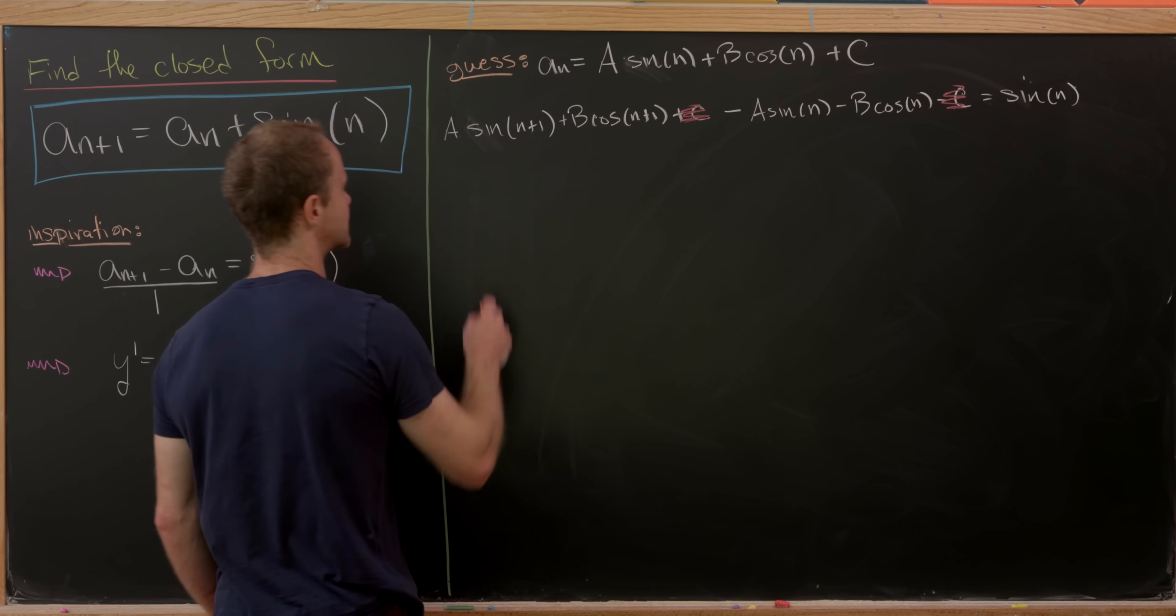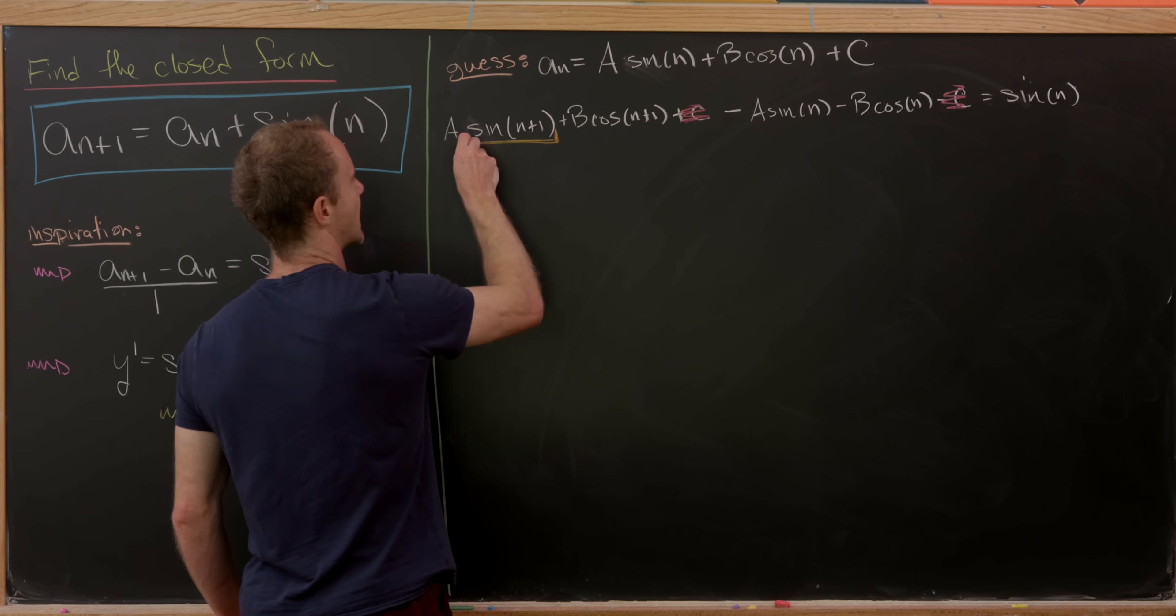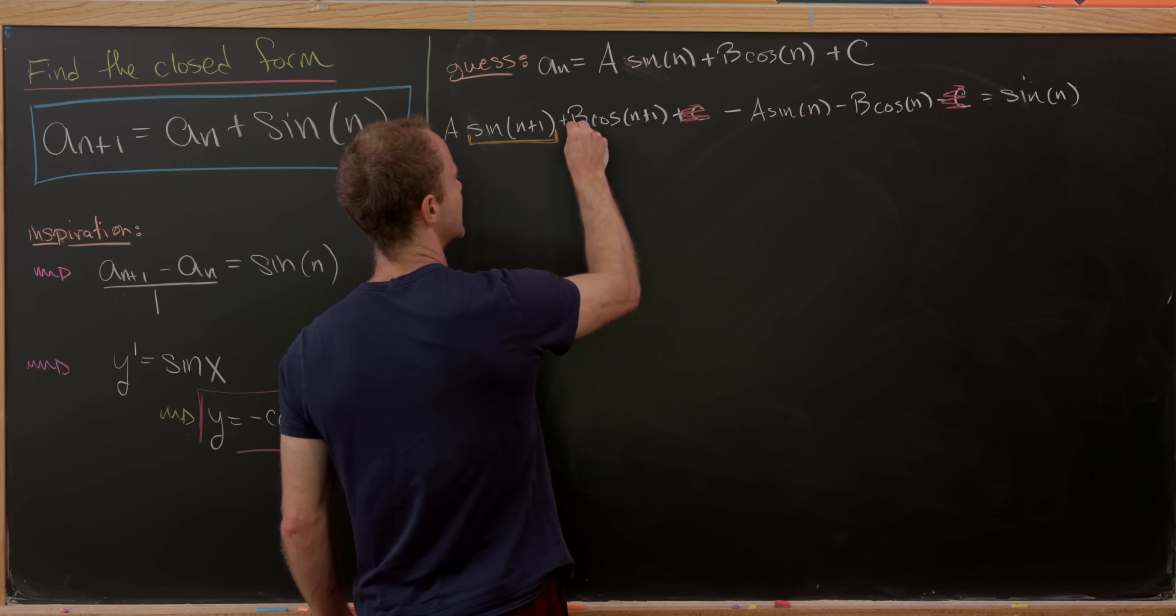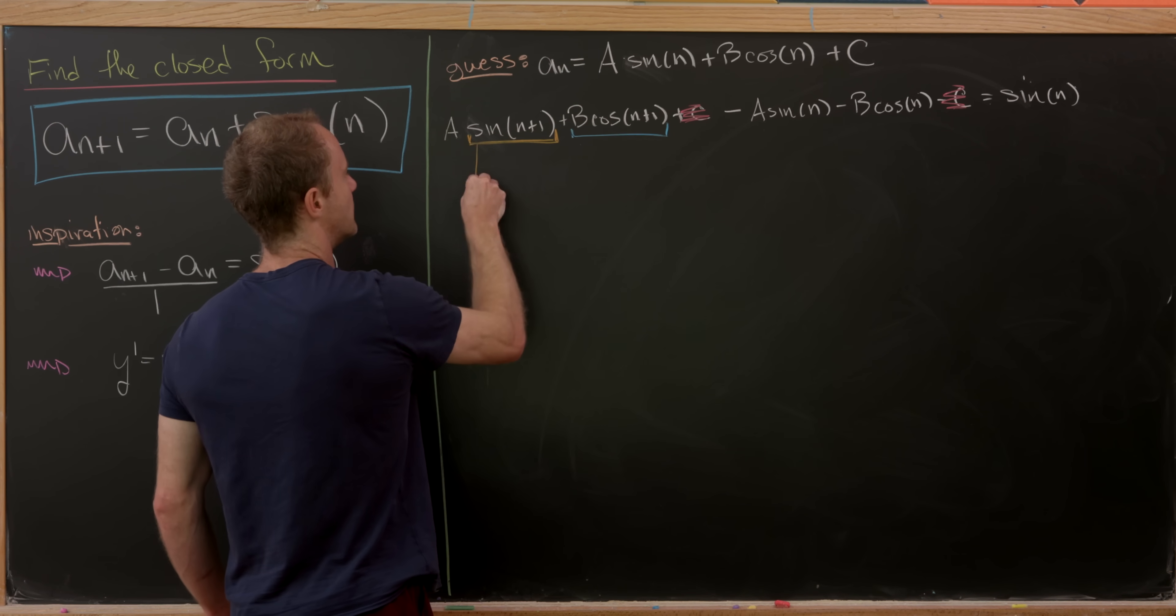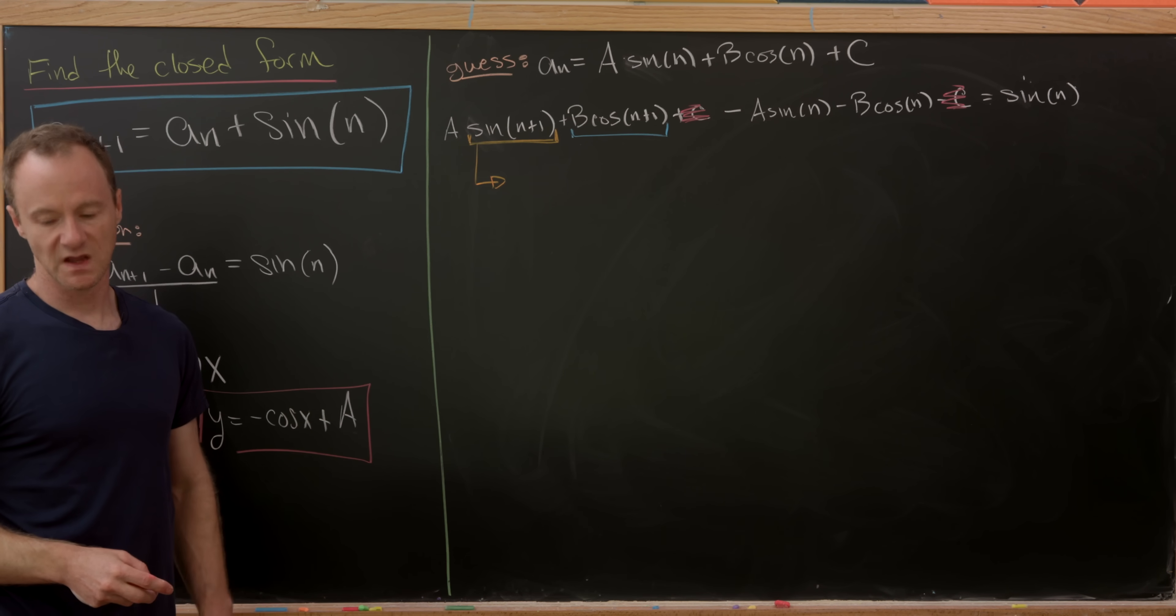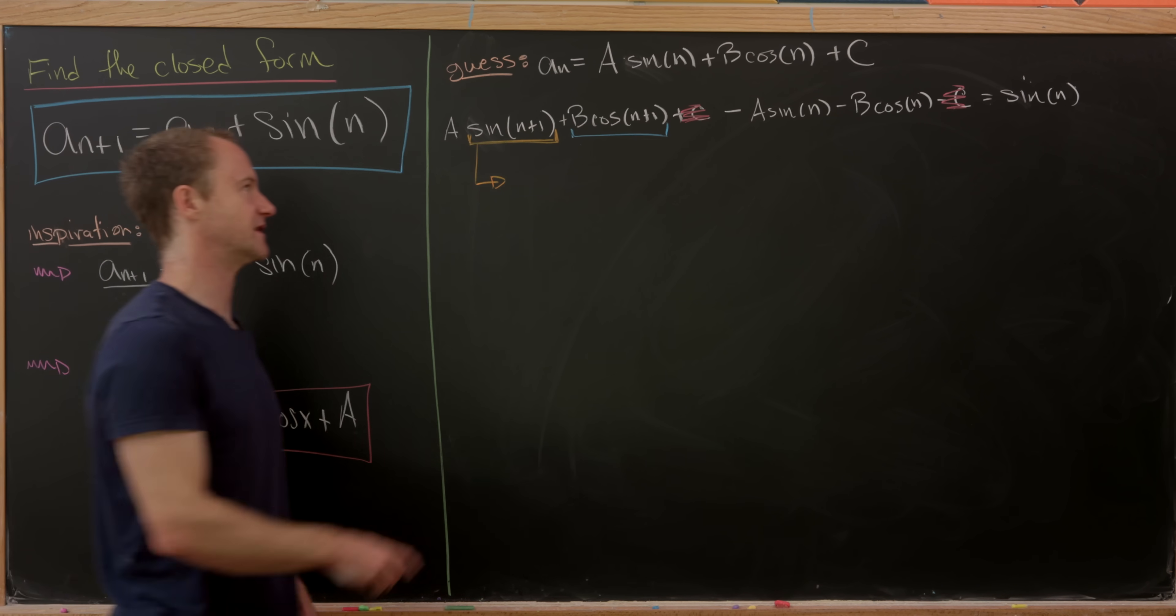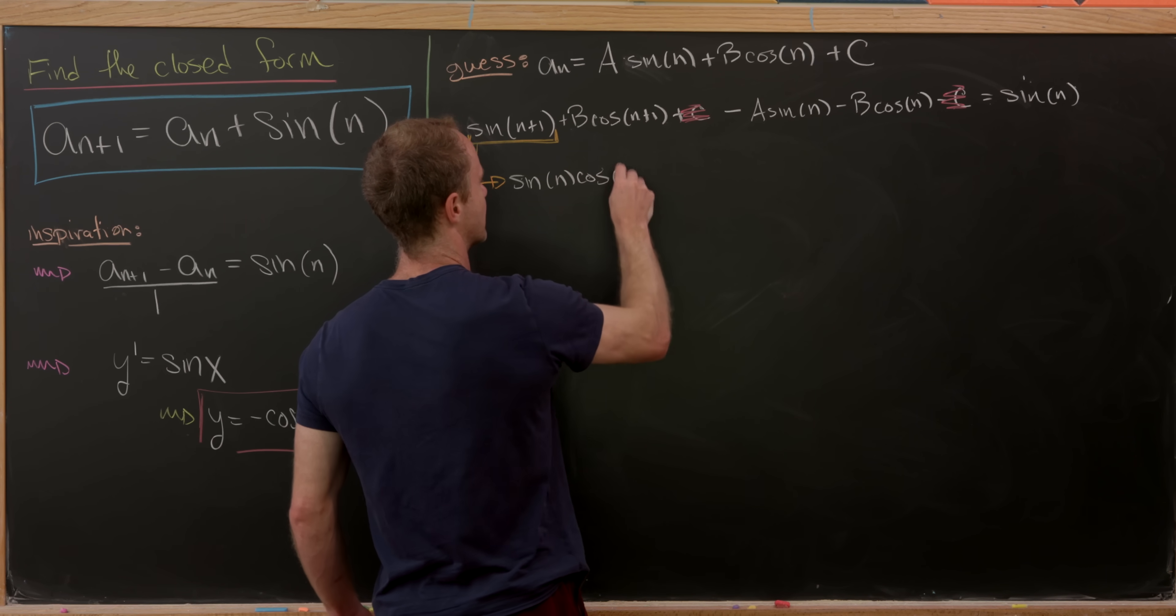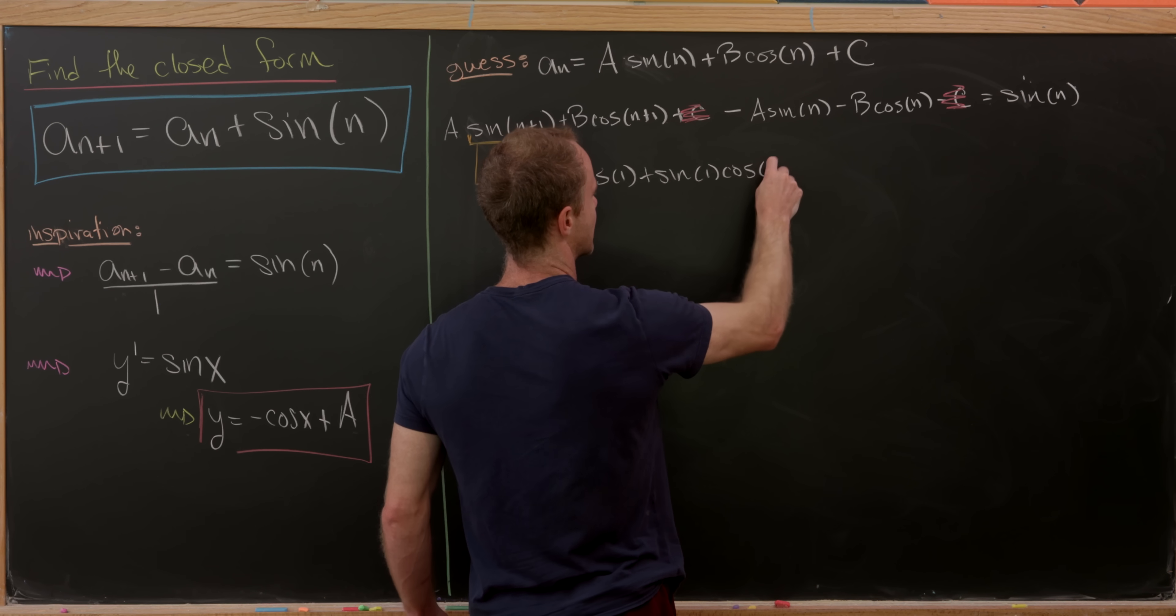So next up, we look at these kind of odd terms out. And I would say the odd terms out are the sine of n plus 1 and the cosine of n plus 1. And we think to ourselves, what can we do with these? But there are some nice sum angle formulas that'll help us simplify these. And that would be sine of n times cosine of 1 plus sine of 1 times cosine of n. That's from the well-known sum angle formula for sine.